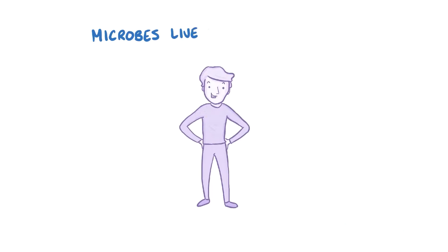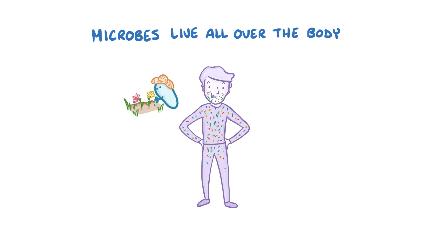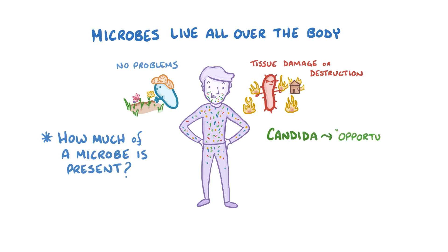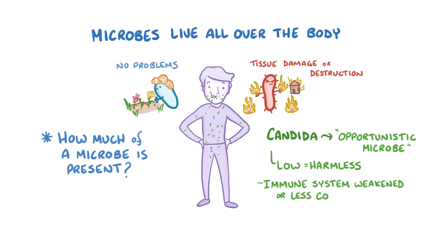It's normal for microbes like bacteria, fungi, and viruses to live all over the body, but each microbe is slightly different in terms of whether it's colonizing the body — in other words just living and not causing any problems — or whether it's infecting the body, which is causing some degree of tissue damage or destruction. An important factor is exactly how much of a microbe is present. Candida is considered an opportunistic microbe. When the amount of Candida is relatively low it's harmless, but if a person's immune system is weakened, or if there's less competition for the Candida, then the amount of Candida can increase, and that's called Candida overgrowth.